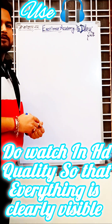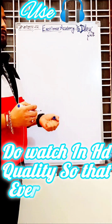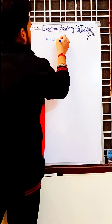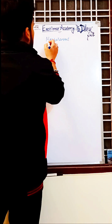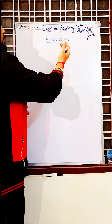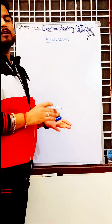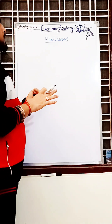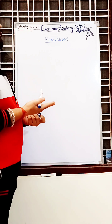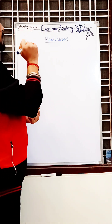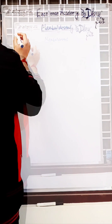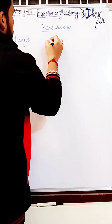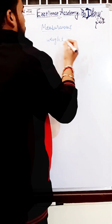Hello everyone, so the topic which we are going to start today is measurement. Whatever is around us can be measured, whether it be length, weight, or whatever. Different units are there for different types of things. If we distribute this into three parts, first what we can say is length, then comes weight, and after weight is volume.